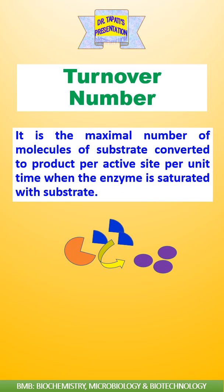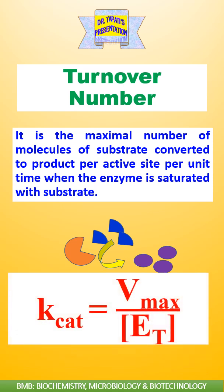Turnover number is the maximal number of molecules of substrate converted to product per active site per unit time when the enzyme is saturated with substrate. The formula is k_cat = V_max/E_T, where k_cat is turnover number.